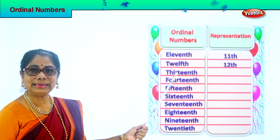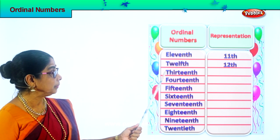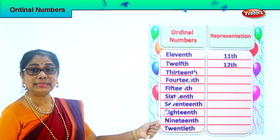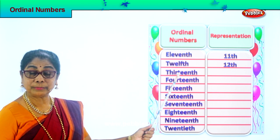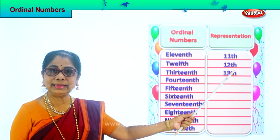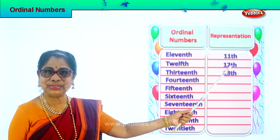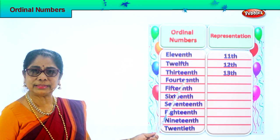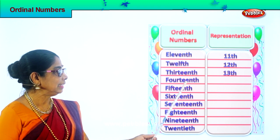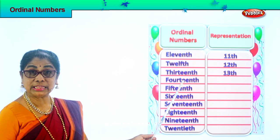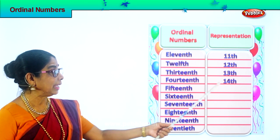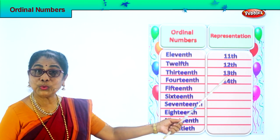Let's look at the next one — this is 13th, spelled T-H-I-R-T-E-E-N-T-H. 13th. We represent 13th by putting number 13 and TH at the side: 13th. Now this is 14th. Look at the spelling: F-O-U-R-T-E-E-N-T-H. 14th. How do you represent 14th? Write number 14 and TH at the side: 14th.